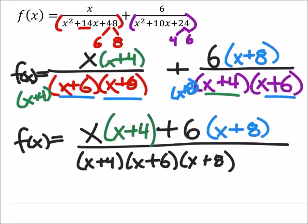So having those common denominators allows us to add this numerator, which is x times x plus 4, and then we'll add it to this other numerator, which is 6 times x plus 8. Now if we distribute the x and the 6, we would have this new expression here, this new function.